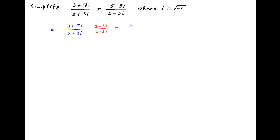The second term in the given expression is 5 minus 8i divided by 2 minus 3i. Multiply and divide this with the conjugate of the denominator, which is 2 plus 3i.